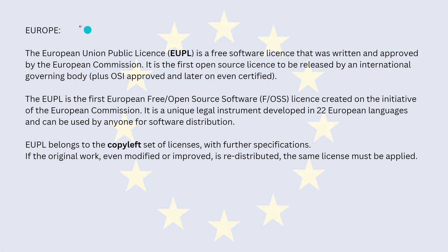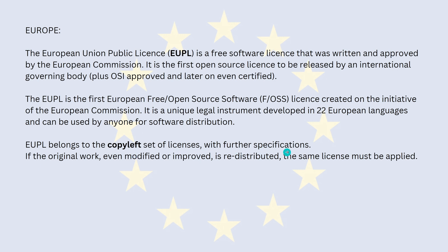You might ask: what if I'm in Europe? In Europe, there is another license — the European Union Public License, or EUPL. It is a free software license. It is approved by law and it is also OSI certified — approved by the American association. It is the first free and open source software license generated and valid in 22 European languages and states. It belongs not to the permissive license set, but to the copyleft license set, and it has further specifications.